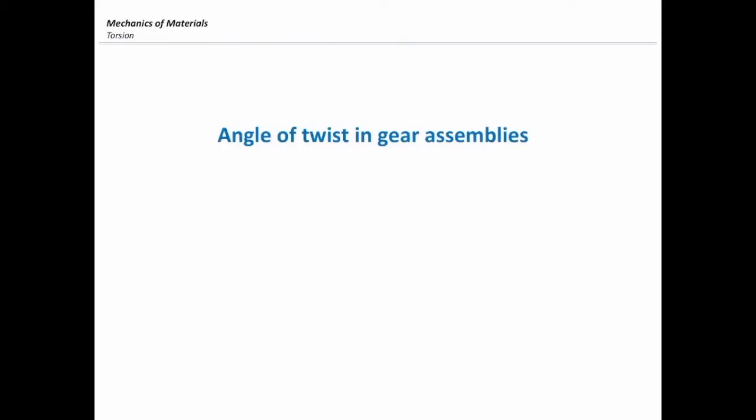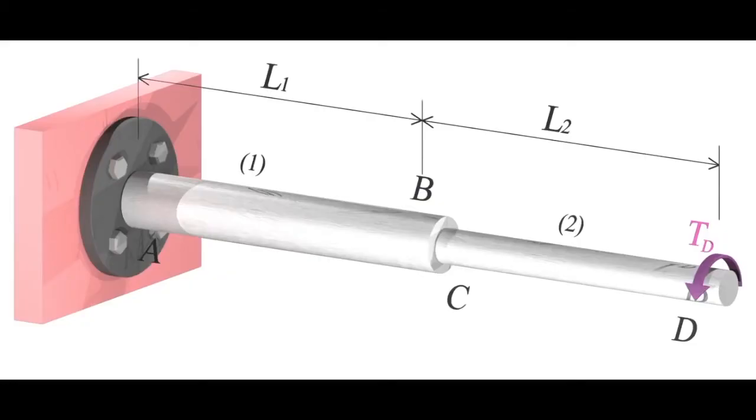The topic that I want to talk about is the angle of twist in gear assemblies. Consider this case. There are two shafts connected together. Consider you want to determine how much is the twist at the right end, at D.